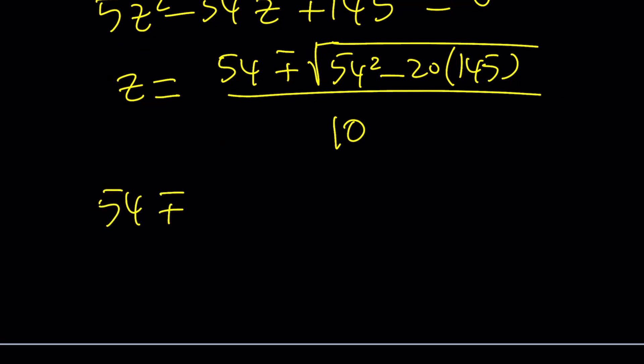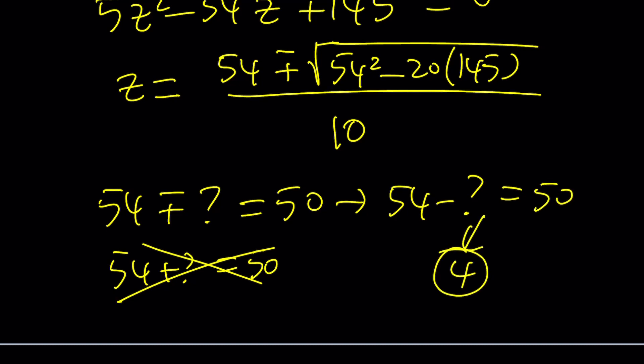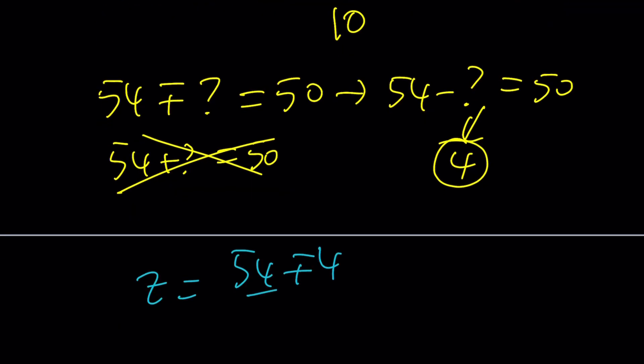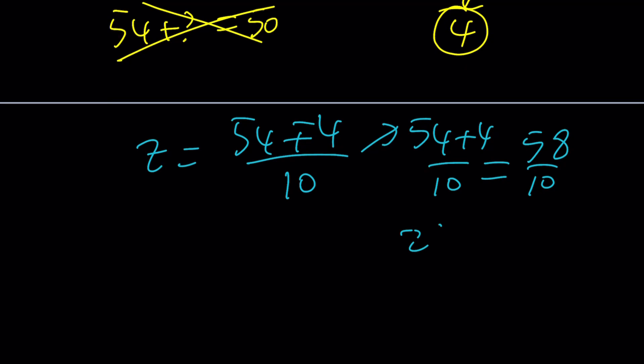So we should be getting 5 from here, which means that the numerator must be 50 for one of these values. So 54 plus minus something equals 50. It could be 54 plus something equals 50, in which case, inside the question mark, we're supposed to have negative 4. But that's a radical, it can't be negative. So we have to have a minus sign, which means 54 minus something equals 50. So this whole thing needs to equal 4, so that we can get a 5 as a solution. And that gives us z equals 54 plus minus 4 divided by 10. And we know that one of them is 5, 54 minus 4 divided by 10. But what about 54 plus 4 divided by 10? That should be 58 over 10, which could also be written as 29 over 5 as the other solution.